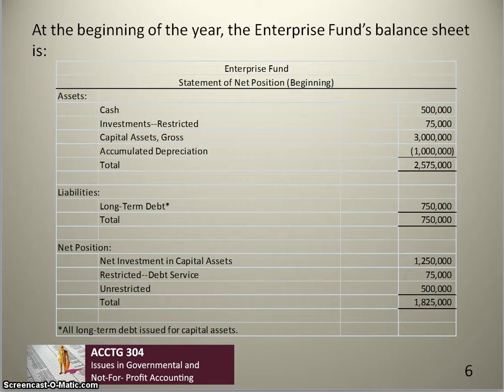Restricted net position for debt service is $75,000, which corresponds to the $75,000 in restricted investments shown in the assets section. In this simple example there is a one-to-one correspondence between restricted assets and restricted net position, though that's not always the case. The balance of net position is unrestricted at $500,000.